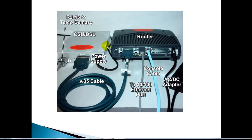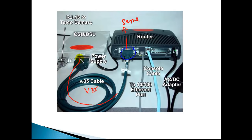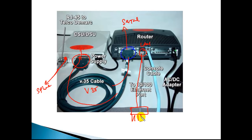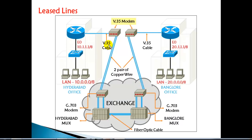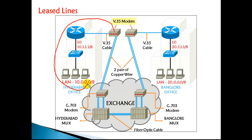Looking at a live diagram, you have a serial cable connecting here — this is the serial port — and a V.35 cable connecting to the modem. Different types of converters are on this modem, and from there a service provider line comes and connects on this modem. There is also a LAN port connecting to the switch, from where all the users in the LAN are connected.